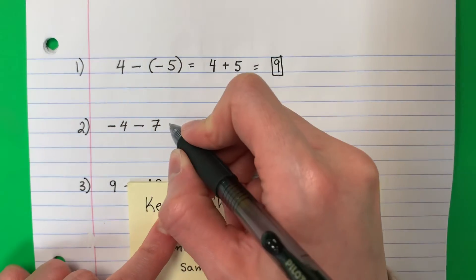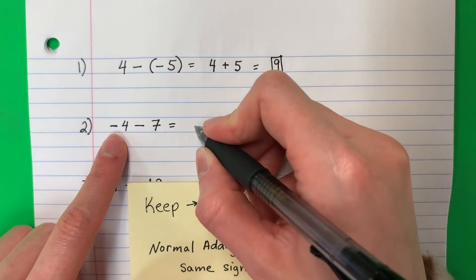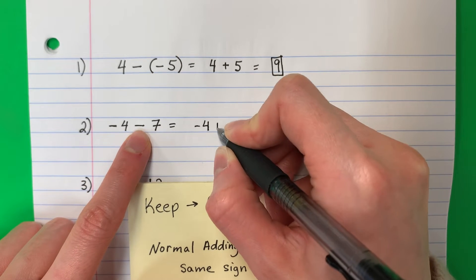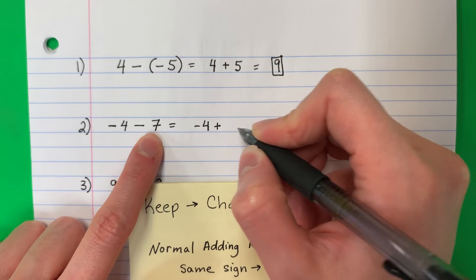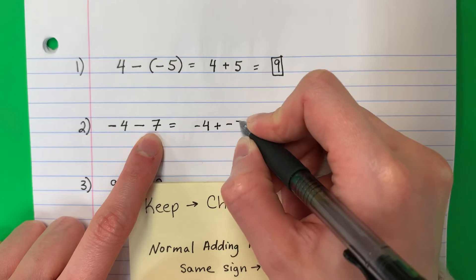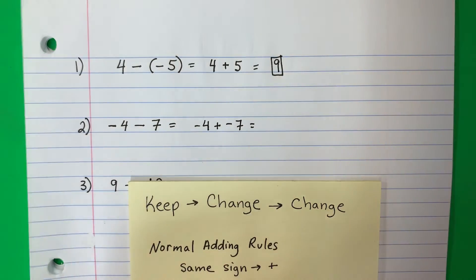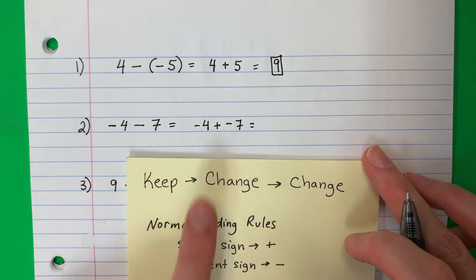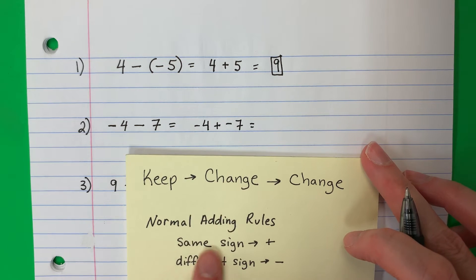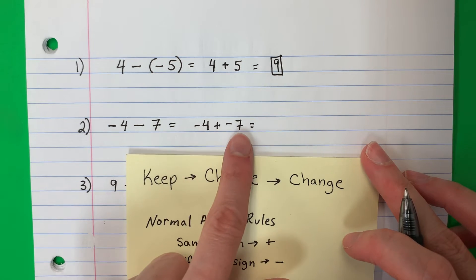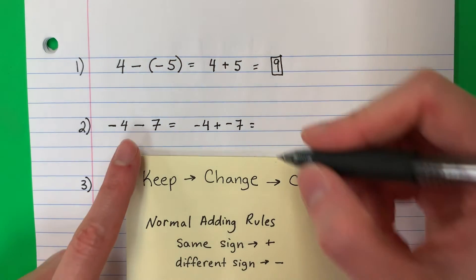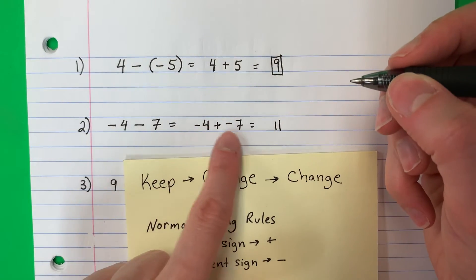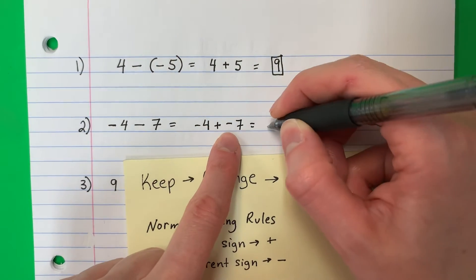Keep, change, change. Minus is now plus. Positive 7 is now negative 7. So it's negative 4 plus negative 7. Same sign — both negative — so you add. 4 plus 7 is 11, and keep the same sign. The same sign is negative, so the answer is negative 11.